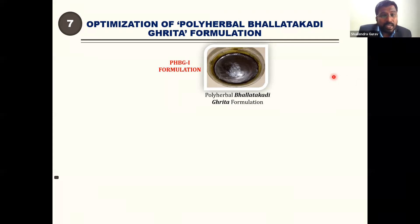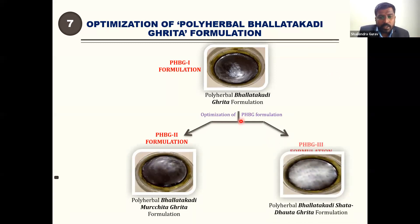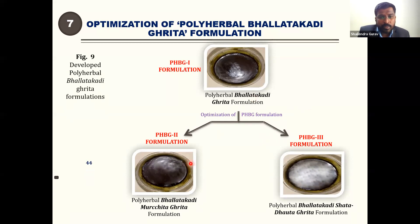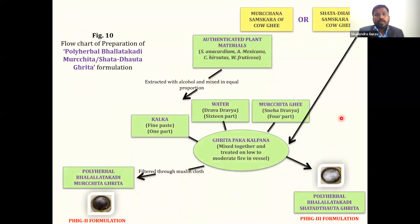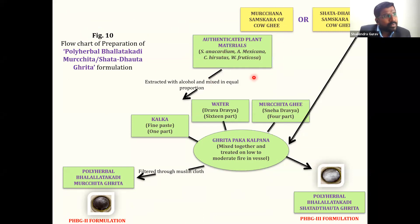The polyherbal Balatakadi formulation was optimized and processed with Murchana Samskara and Shatadota. In the Murchana process, instead of plain cow ghee, Murchita Ghee is used. In the Shatadota process, Ghee washed 100 times with water is used. All other formulation steps remain the same, giving three different formulations: plain PHBG, PHBG processed with Murchana, and PHBG processed with Shatadota.